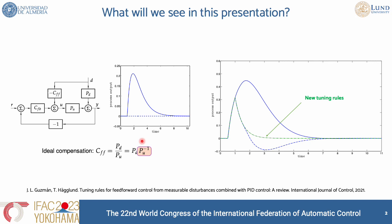When we have that problem and implement the classical control scheme using only the realizable part, we obtain a response shown in dashed line — we don't get a very good response anymore. We are not able to reject the disturbance completely and instead obtain a strange response with some overshoot. What I'm going to show during this talk is that we are able to properly tune the feedforward compensators to save the closed-loop response with